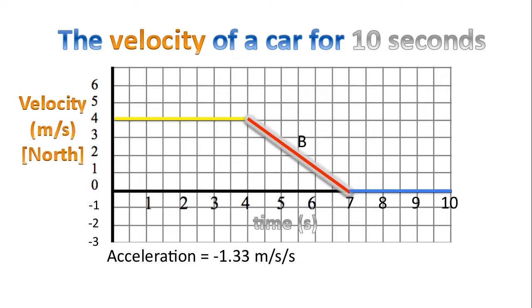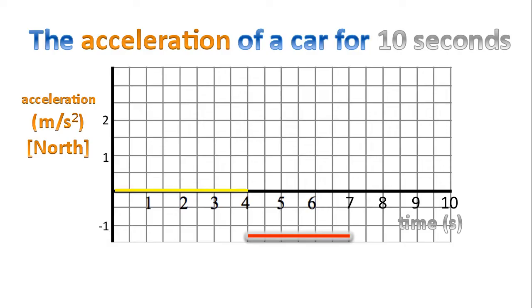So how do we plot that in an acceleration-time graph? Well we draw a line. That line is drawn at negative 1.333 meters per second per second or negative four thirds meters per second per second. That line starts at four seconds and ends at seven seconds because section B started at four seconds and ended at seven seconds.